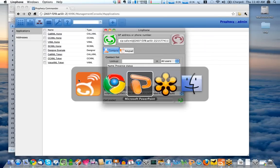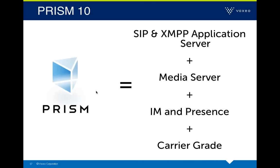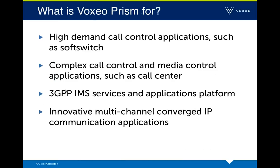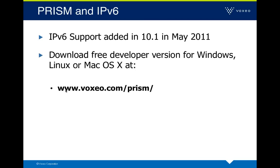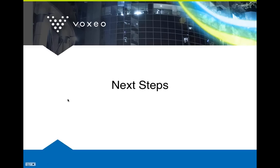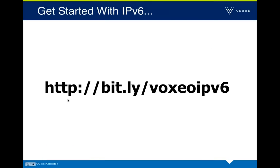We also have a product called Prism, which is a SIP and XMPP application server and media server with IM presence support. It's designed for high-demand environments — over 20,000 simultaneous connections on a single box — with very complex call control including IMS levels. It has a full SIP registrar and proxy. We recently added IPv6 support, and you can download a free developer version for Windows, Linux, or Mac OS X.